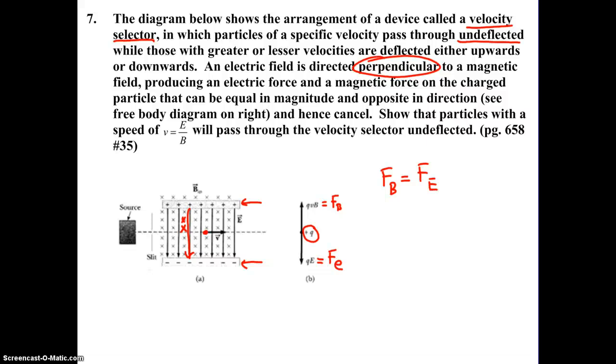So if our FB is equal to FE, that means we can set the equations for each equal to each other. And the equation for FB, for a charge moving into the existing magnetic field, is QVB, and the force due to our electric field is Q times E. What's neat about this equation is that you can see that the charge cancels so that the speed is not dependent on the charge of the particle, which is pretty neat. So this V, isolating it, would be E divided by B. This is exactly what they wanted us to derive and show.